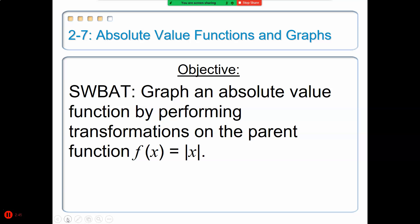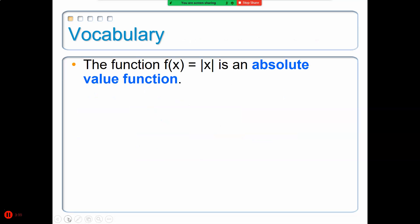Today we're going to graph absolute values. Absolute values are a special type of piecewise function. Because absolute values represent a piecewise function, the function f(x) known as the absolute value function is going to always give the shape of a V.